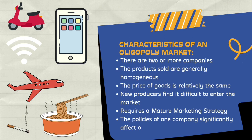Here are some examples of oligopoly markets: the vehicle industry such as motorcycles and cars; internet service providers such as Indihome; cell phone companies such as Samsung and Oppo; instant noodle manufacturers such as Indomie; airline companies such as Lion Air and Citylink; and cigarette companies.